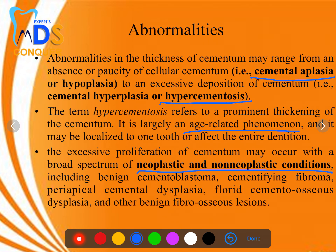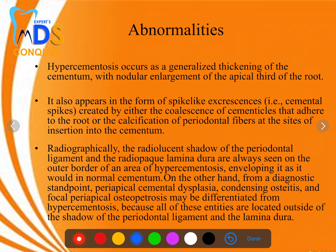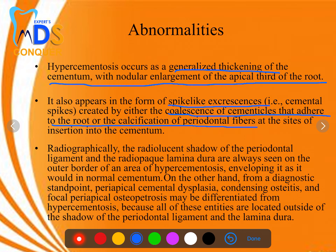Hypercementosis occurs as generalized thickening of cementum with nodular enlargement of the apical third of the root. It can also appear as spike-like excrescences called cemental spikes, which are created by coalescence of cementacles that adhere to the root or by calcification of the periodontal fibers. Please make a note of cemental spikes.